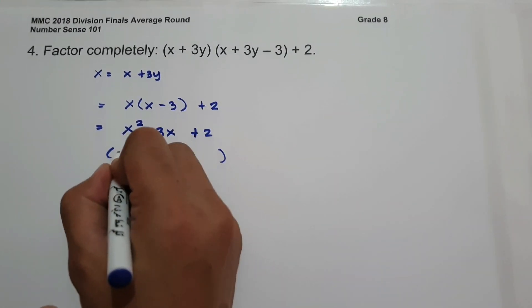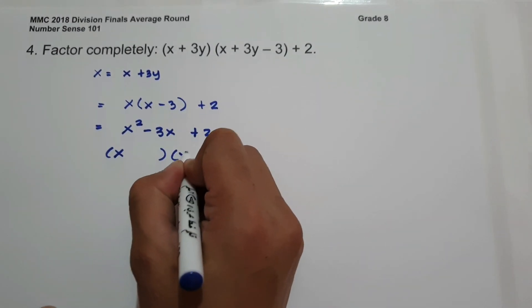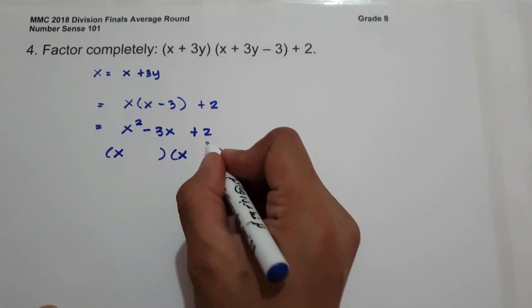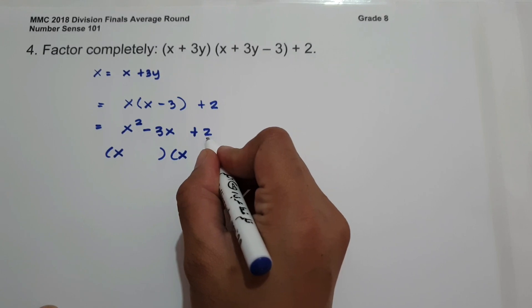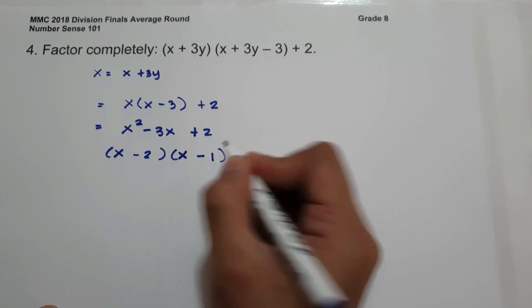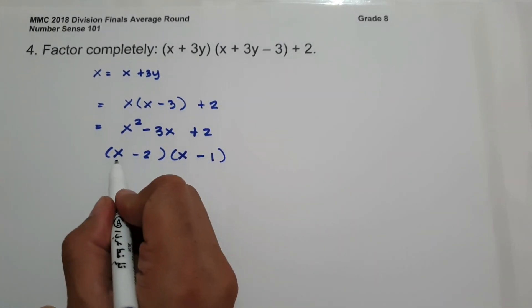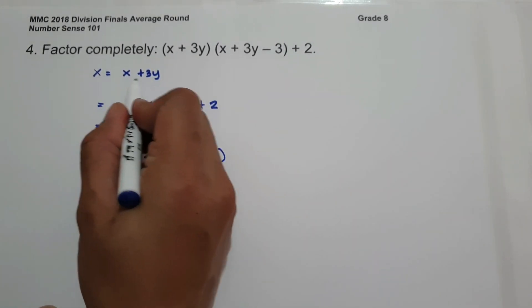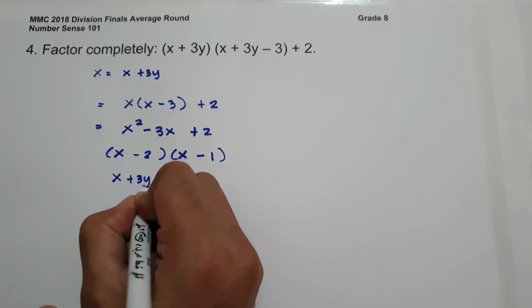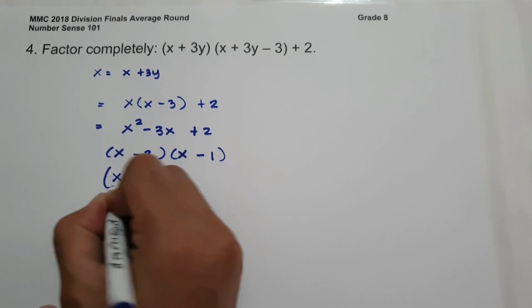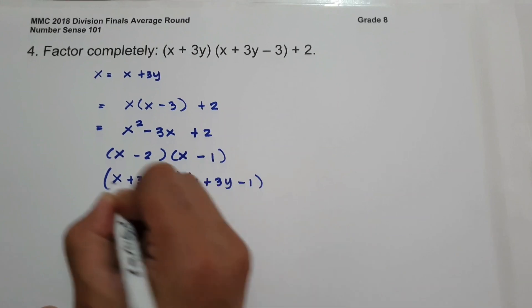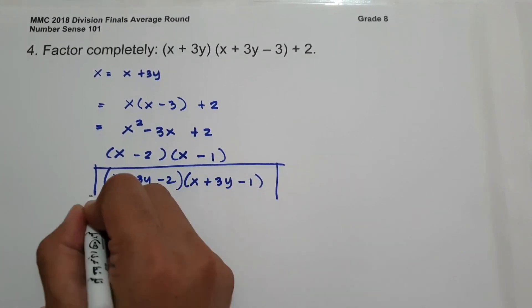Let us factor x squared minus 3x plus 2. The factors of x squared are x and x. We need two numbers that multiply to positive 2 and add to negative 3, and those are negative 2 and negative 1. Since the value of x is x plus 3y, we substitute back to get x plus 3y minus 2, times x plus 3y minus 1. This will be the factor and our answer.